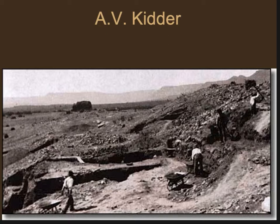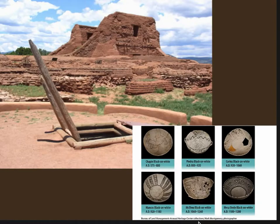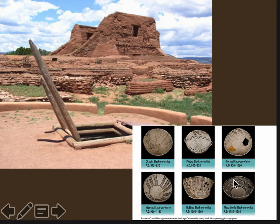One of the groundbreaking people in scientific excavation — making archaeology more rigorous and more scientific — was an archaeologist by the name of A.V. Kidder. He was actually born in Marquette, Michigan; his father was a mining engineer. One of the things he pioneered was systematic excavation using stratigraphy. In addition to that, he also used the study of ceramics to create a chronology — chronos meaning time, logos meaning the study of.